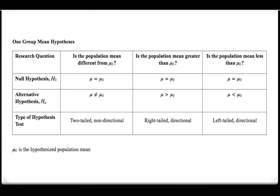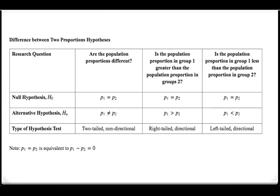In your online notes, there are tables for all of the possible parameters you could be studying this week. These tables give you, for the three different possible research questions, the hypotheses you would write, and also whether it would be a two-tailed, right-tailed, or left-tailed test. Note that mu sub O refers to the number in the null hypothesis — you would replace that with the number from your scenario. There's also a table for the difference in two proportions.